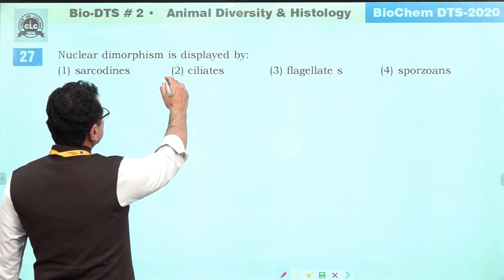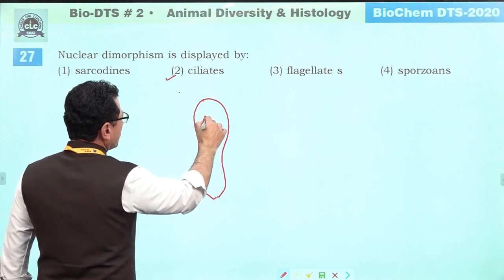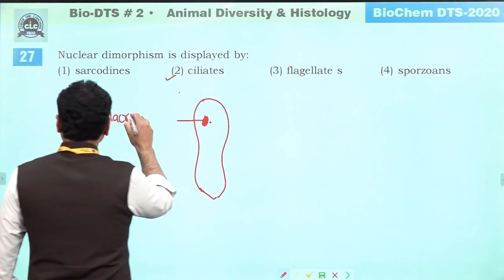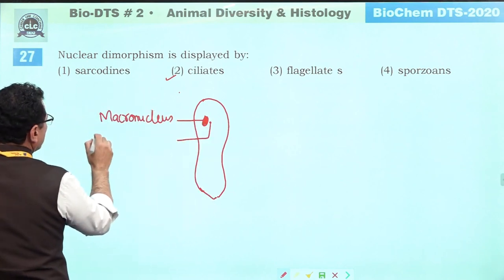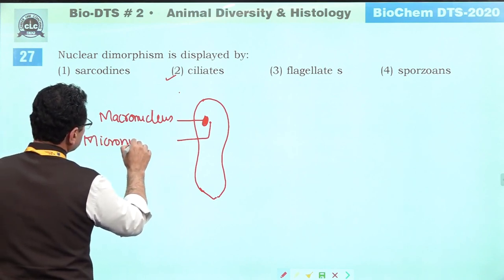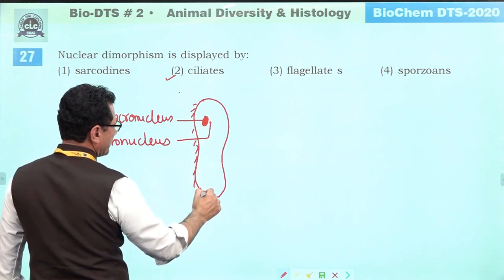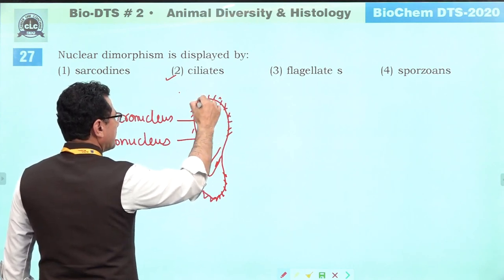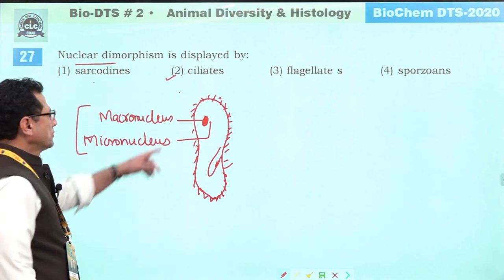Nuclear dimorphism is shown by ciliates, such as Paramecium. In Paramecium there is one macronucleus and one micronucleus. The macronucleus controls metabolic activities and the micronucleus controls sexual and asexual reproduction. So this feature of nuclear dimorphism is seen in ciliates like Paramecium. Correct answer is second.